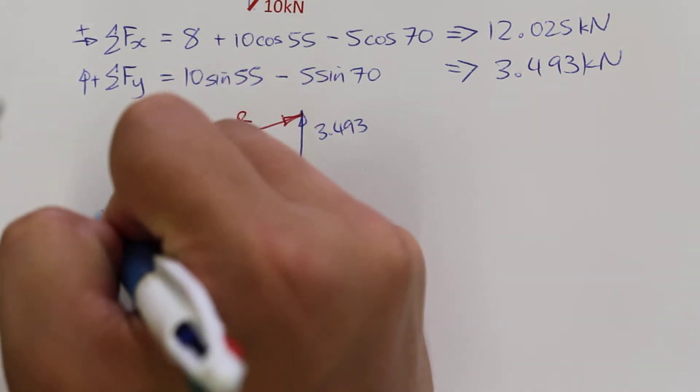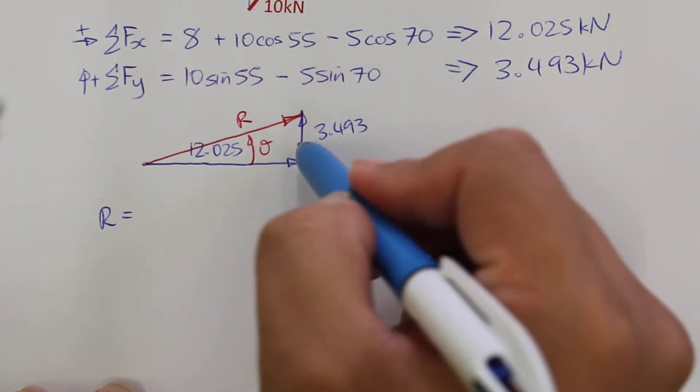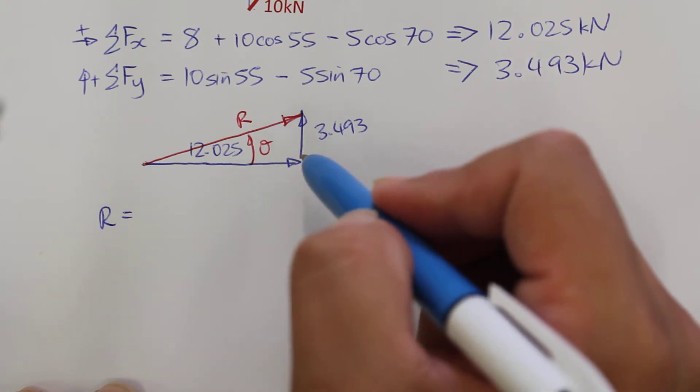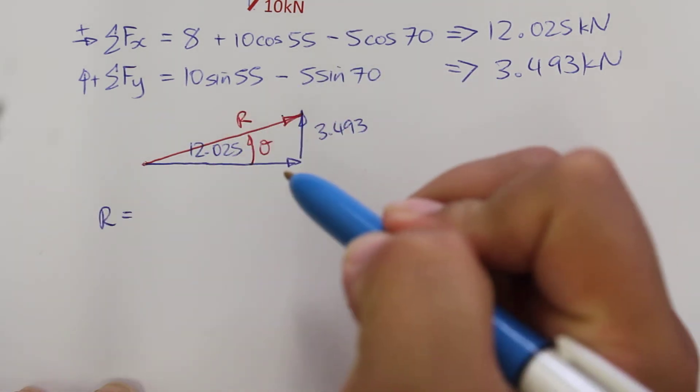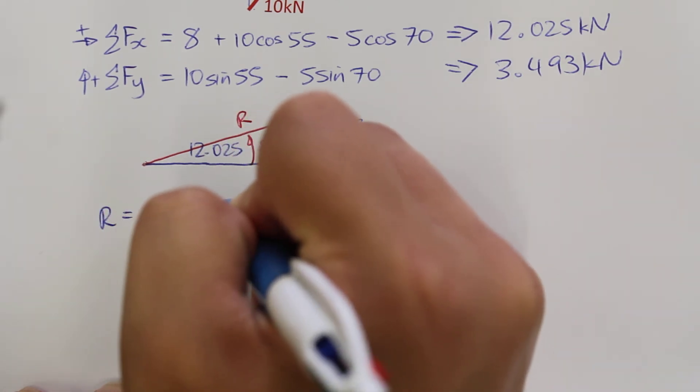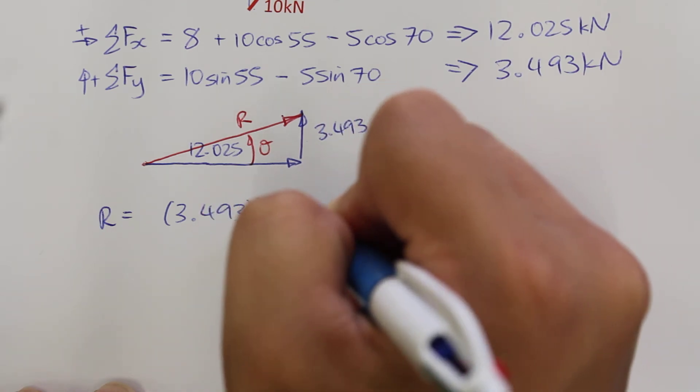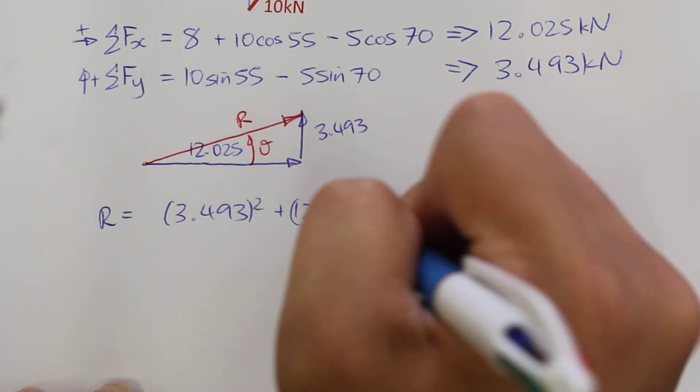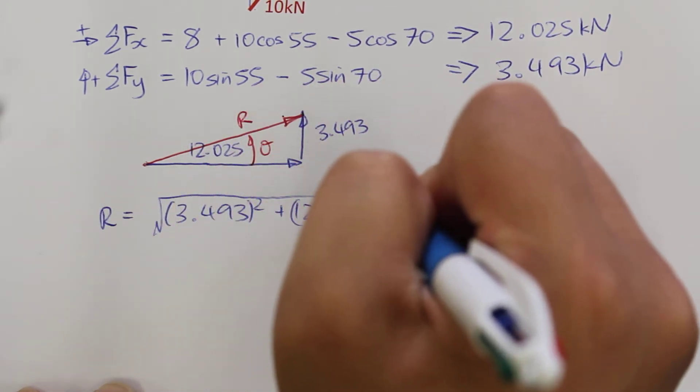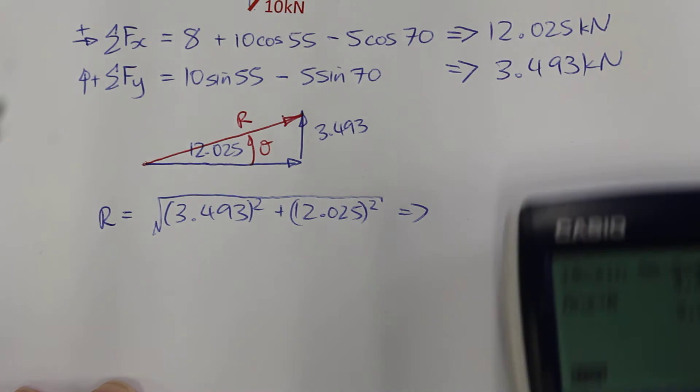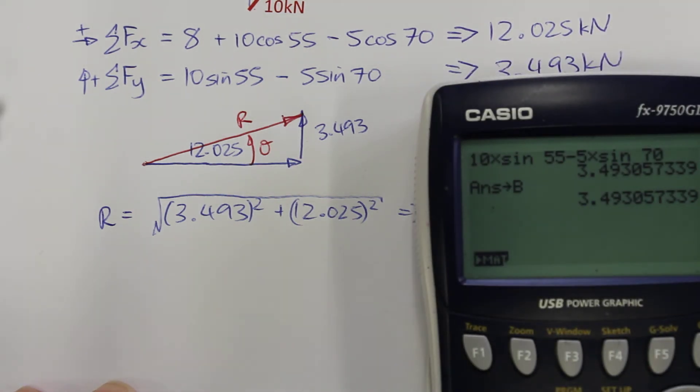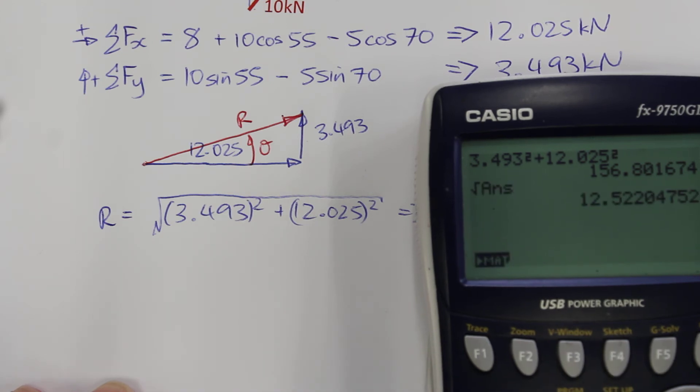So R will be equal to the square of the two sides of this triangle added together. So using Pythagoras, we have 3.493 squared plus 12.025 squared, and that value square rooted. So I have stored those two numbers but we can use that. So 3.493 squared plus 12.025 squared and square root of that number, our resultant force is 12.522.